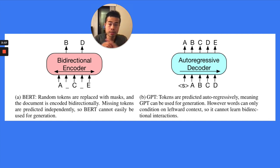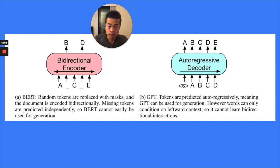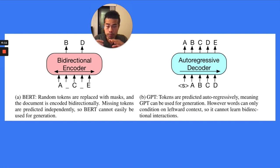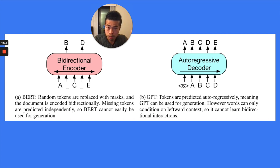Then BART is like a combination of BERT and GPT — the original transformer encoder-decoder architecture. If you read the 'Attention Is All You Need' paper, the original transformer proposal, transformer was built for machine translation. So that's why BART, being based on the transformer architecture, is very good for text generation tasks like machine translation.